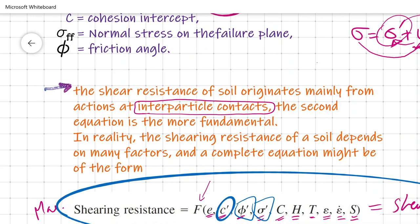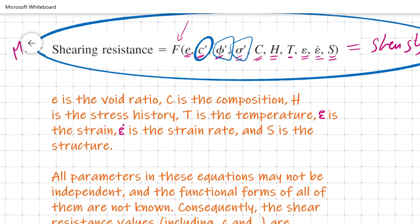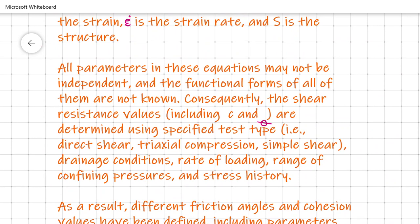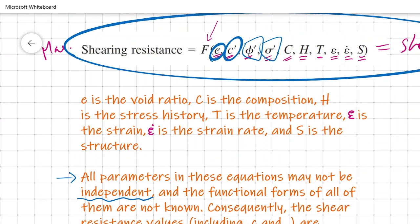We will see in coming lectures how the Mohr-Coulomb equation was the initial one and how, with more research, people upgraded it. Before going further, it is important to note that all the parameters in the shear strength equation may not be independent — they can be dependent on each other. For instance, void ratio can affect cohesion and angle of internal friction. Because of this huge variation, shear resistance values including C and phi are determined using specific test types.